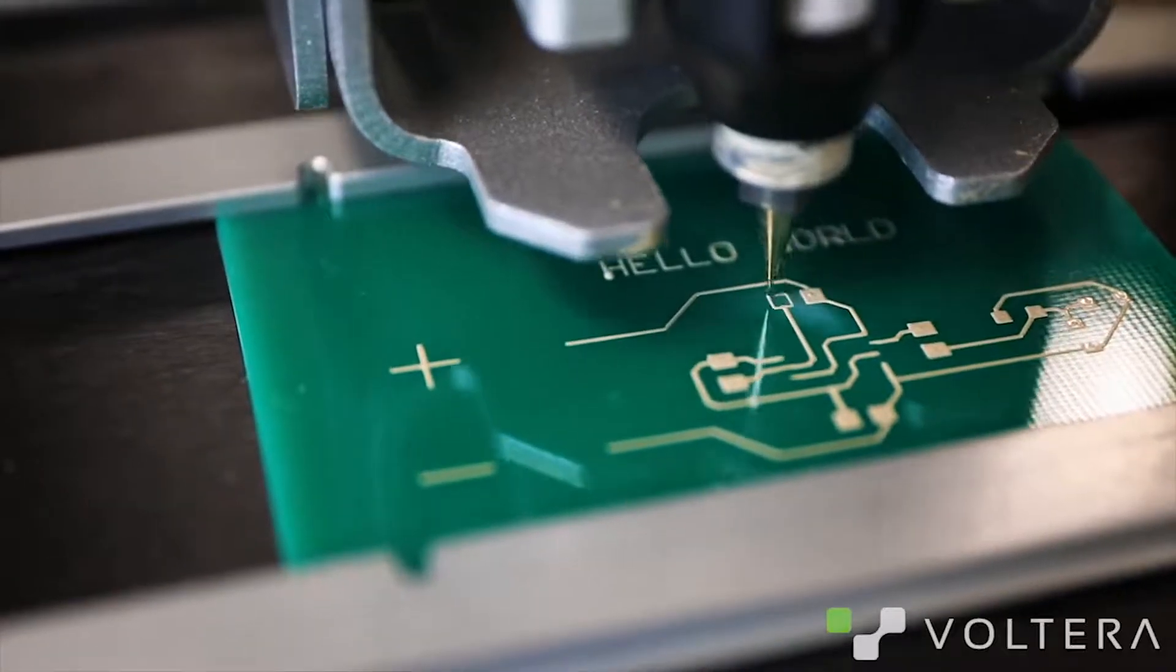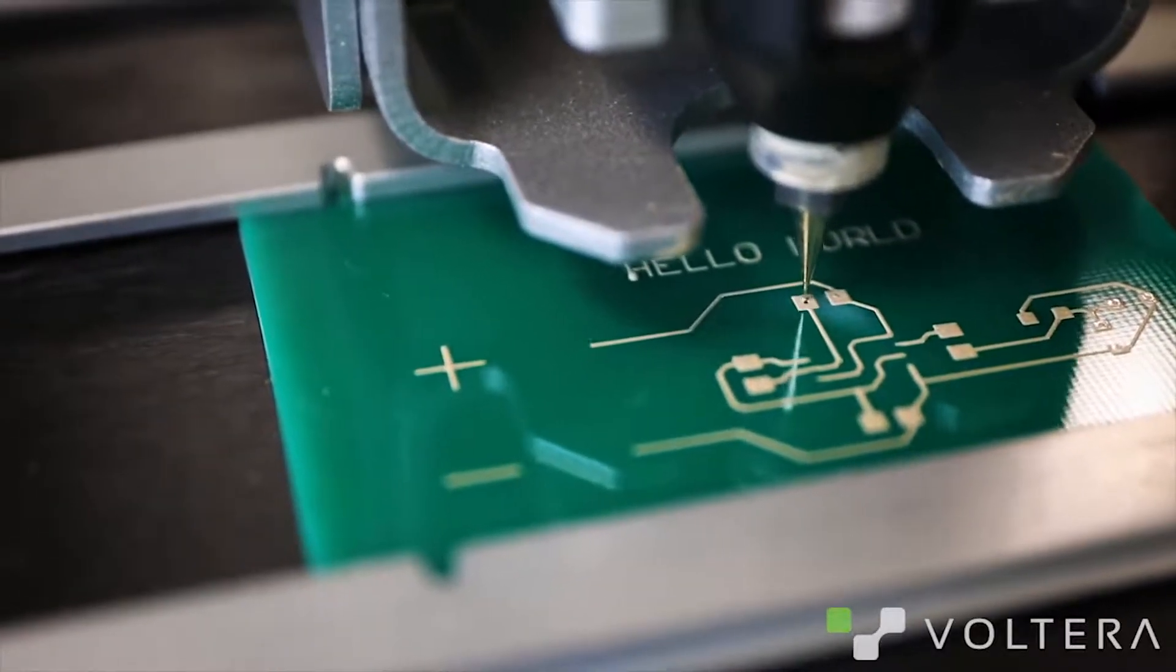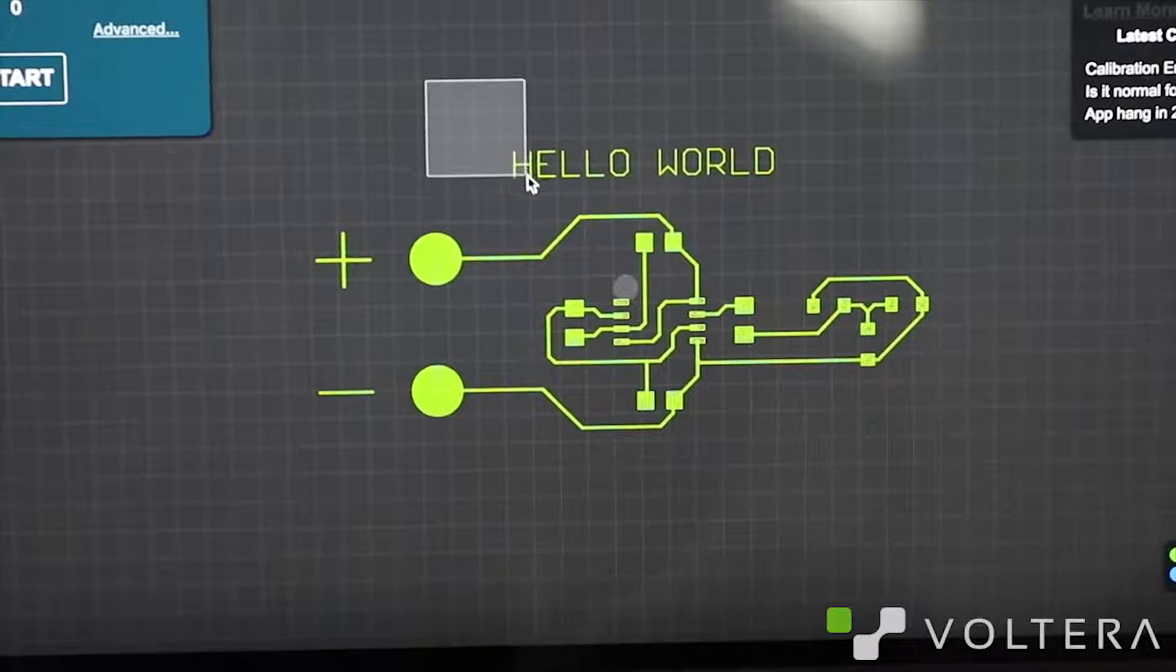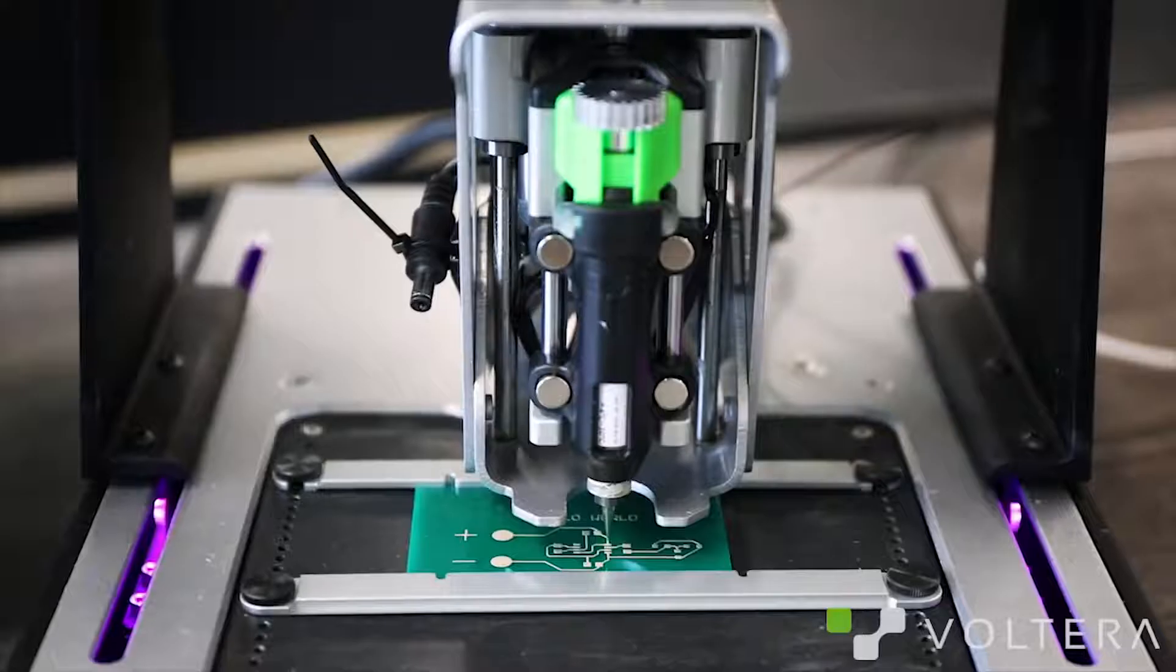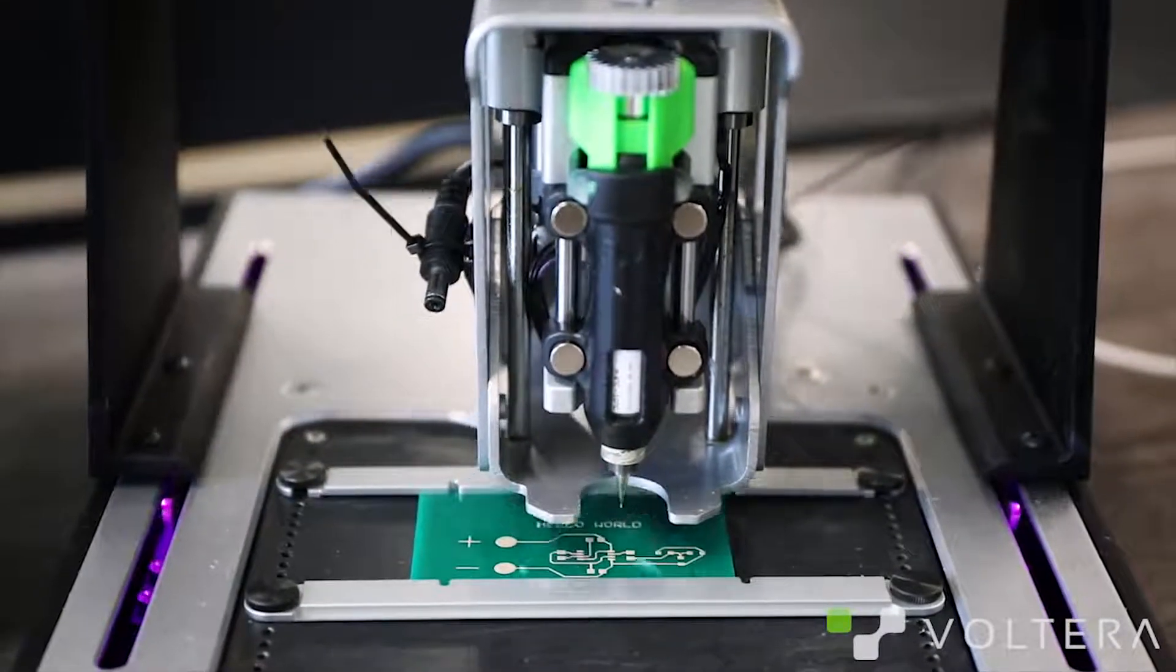You'll see a little blob of ink on the H. This can happen sometimes with the very first trace. I would wipe that off and selectively print to get that fixed up. But it's not connected to anything, so I won't bother. Beauty. The board is printed, but the ink is still wet, so we've got to cure it.